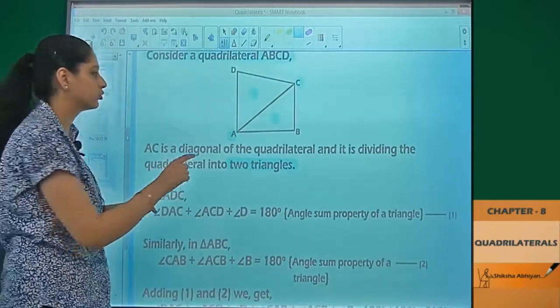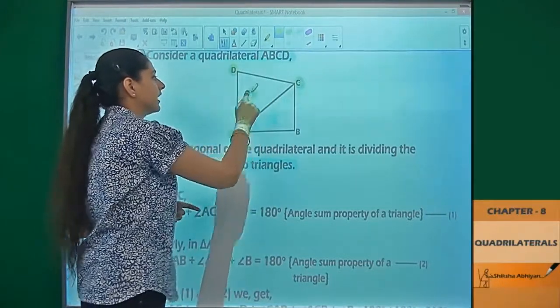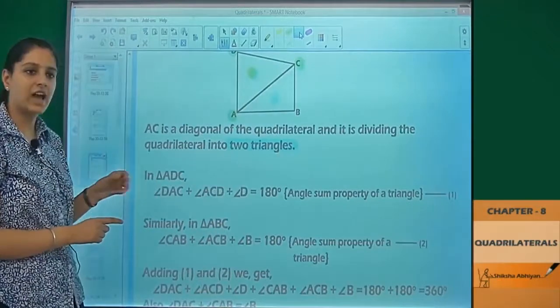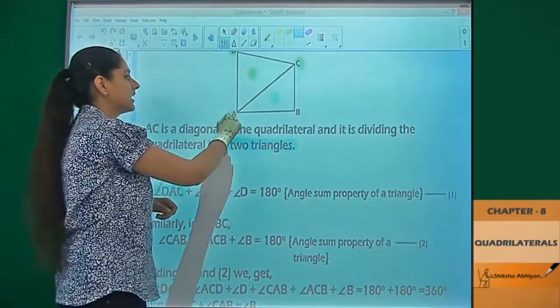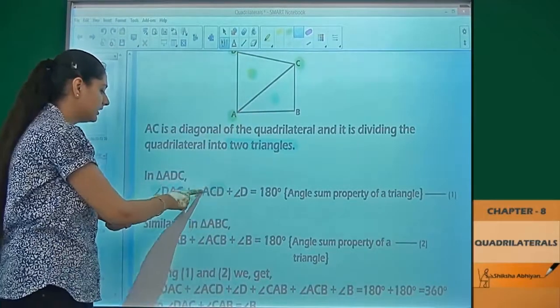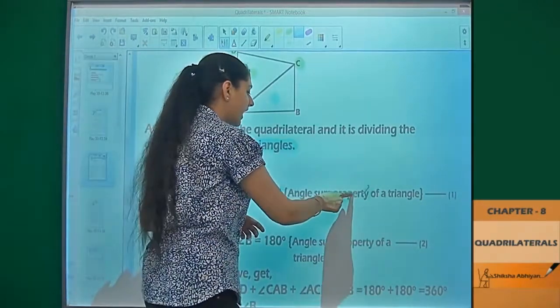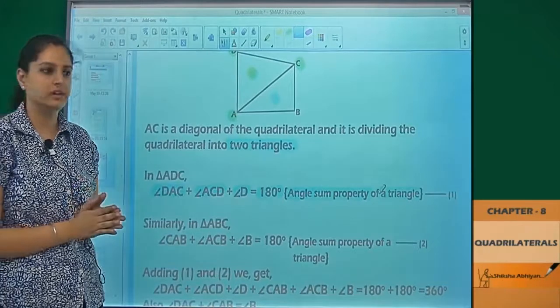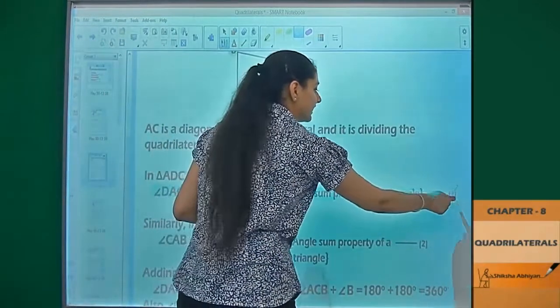If we consider one triangle of these two, that is triangle ADC, there are three angles given inside it. You can see there are three angles: angle DAC, angle ACD, and angle D. So angle DAC plus angle ACD plus angle D is equal to 180 degrees. Why? Because the angle sum property of a triangle says that in a triangle, the sum of all angles is equal to 180 degrees. So in triangle ADC, the sum of these three angles will be 180 degrees. We are taking it as equation number one.